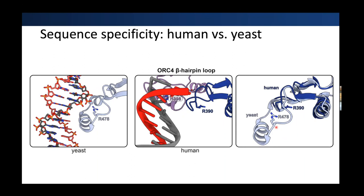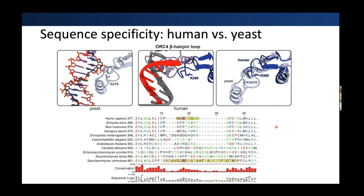When you overlay the human and yeast structures, you can see how much further the yeast beta hairpin loop protrudes and binds into the major groove — an important feature providing sequence specificity to yeast. Looking at the sequence alignment of this region, in higher eukaryotes it's truncated like humans, while as you get closer to single-cell eukaryotes you have this extended area, though there's still not much sequence conservation. I went through all the conformations — I just want to give you a movie to summarize all of them.